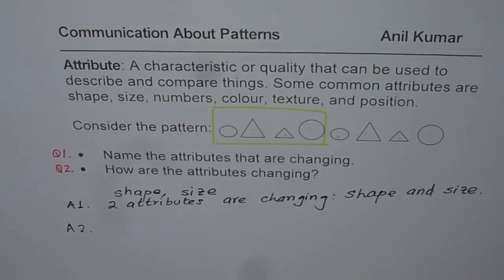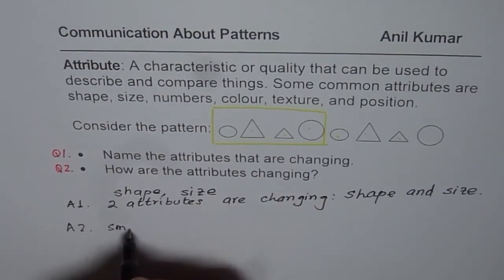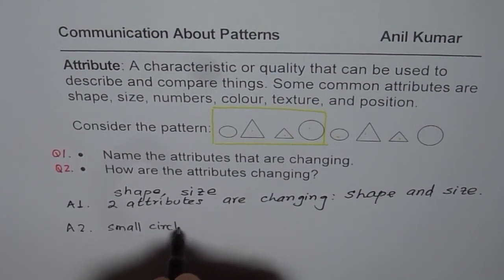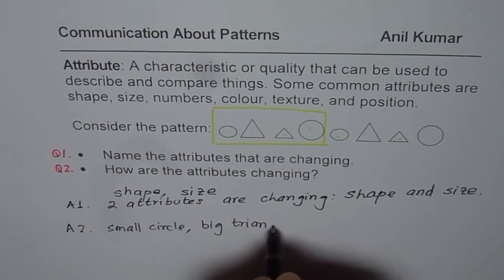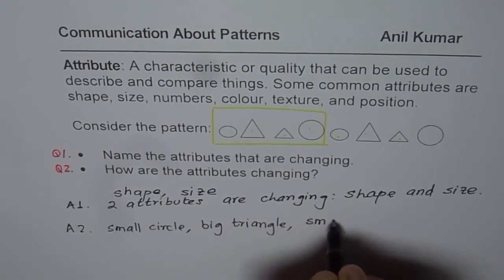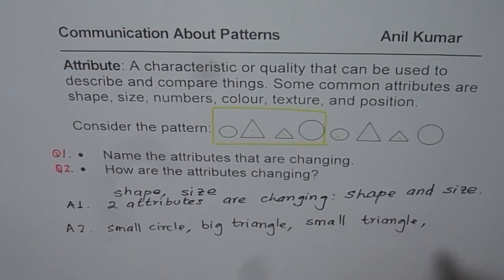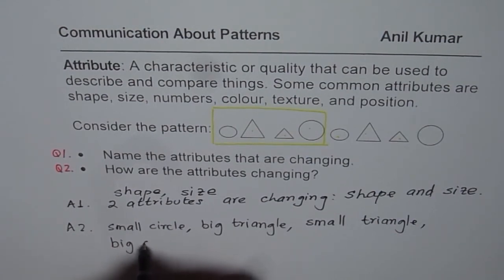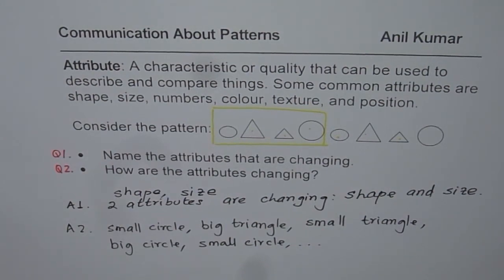So let us describe it. The description is small circle, big triangle, small triangle, big circle. And then again we repeat with small circle, big triangle, small triangle, big circle, and so on. Do you see that? So that is how you can describe the pattern.